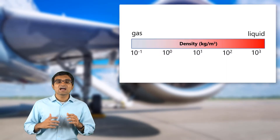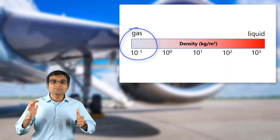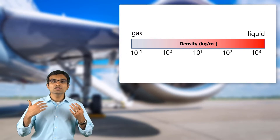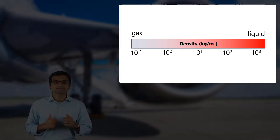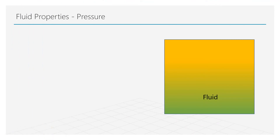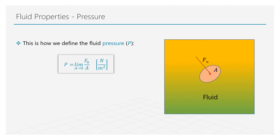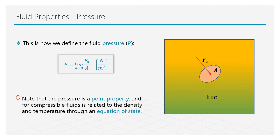Gases are less dense than liquids as they move freely and therefore can be easily compressed. Molecules in a liquid, on the other hand, are close to each other and therefore cannot be compressed easily. Consider a small surface A centered around a point within the fluid at rest — the fluid exerts a normal force on the surface. As the area of the surface becomes small, the normal force per unit area tends to become a fixed value. This is how fluid pressure is defined. Pressure is continuous in space and time and is a point property.